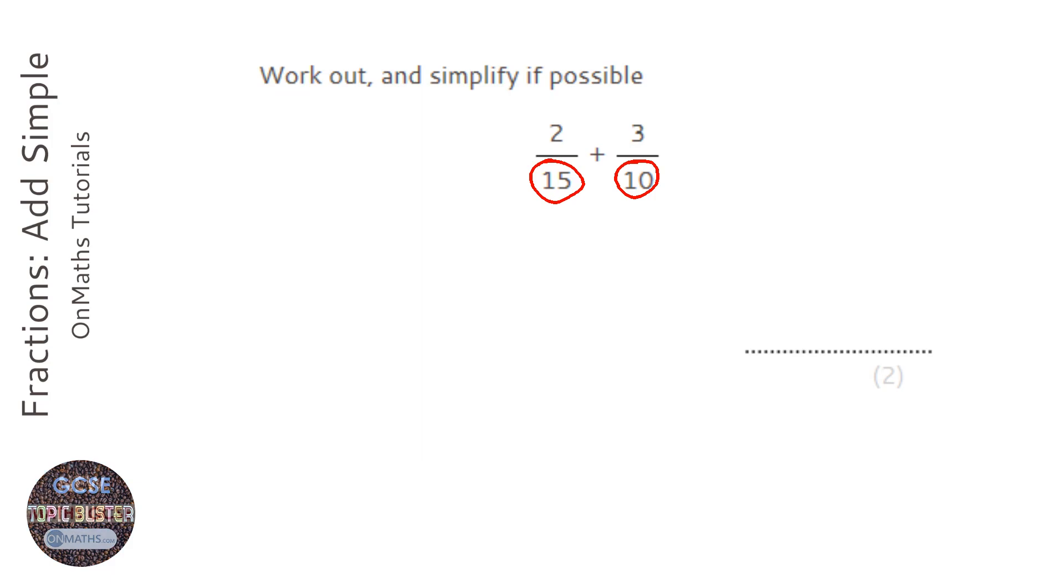One way you can do this is to multiply the denominators together. This will always give you a common denominator, but the problem is you won't always find the smallest one. Now I know 15 and 10,